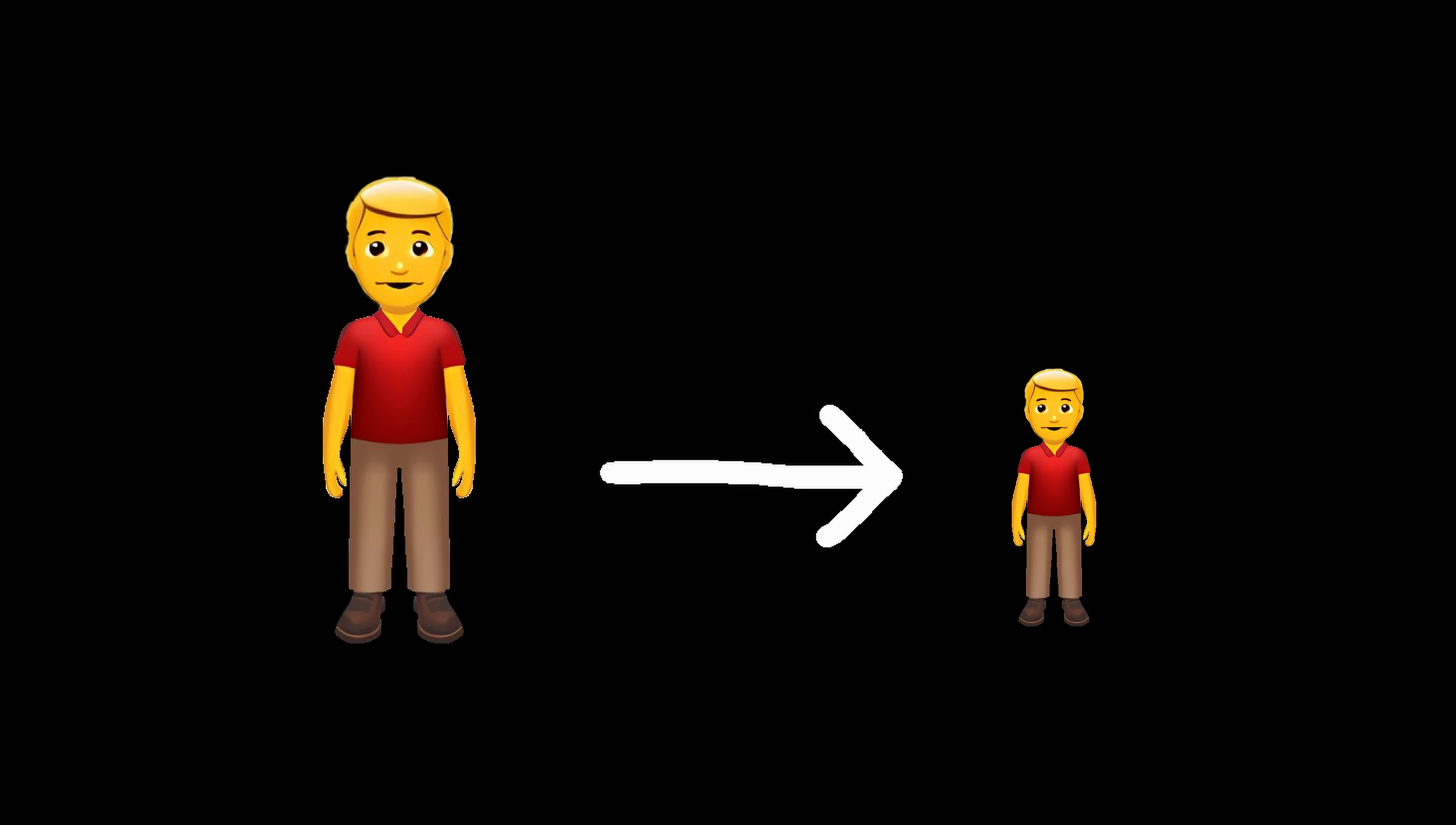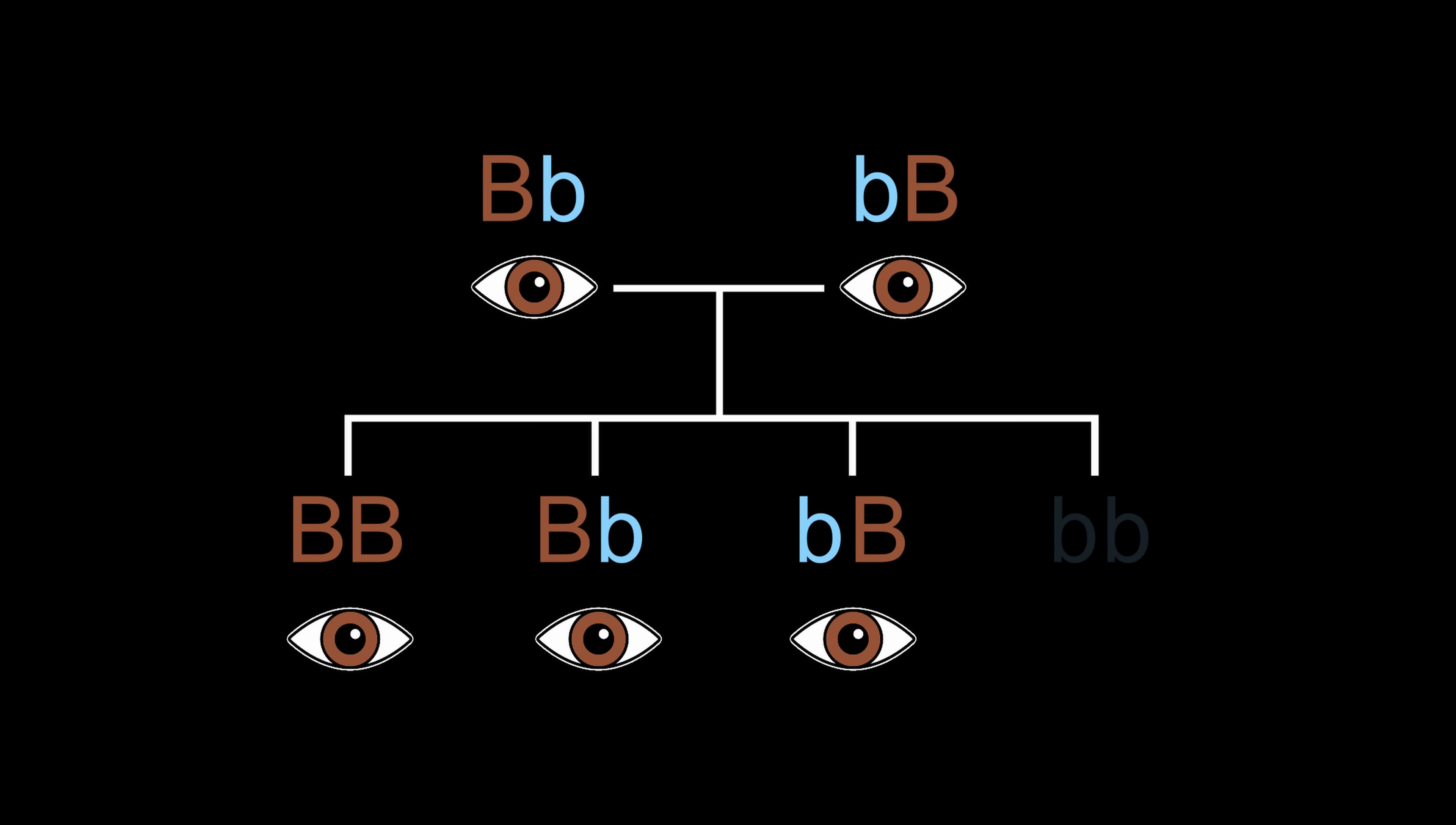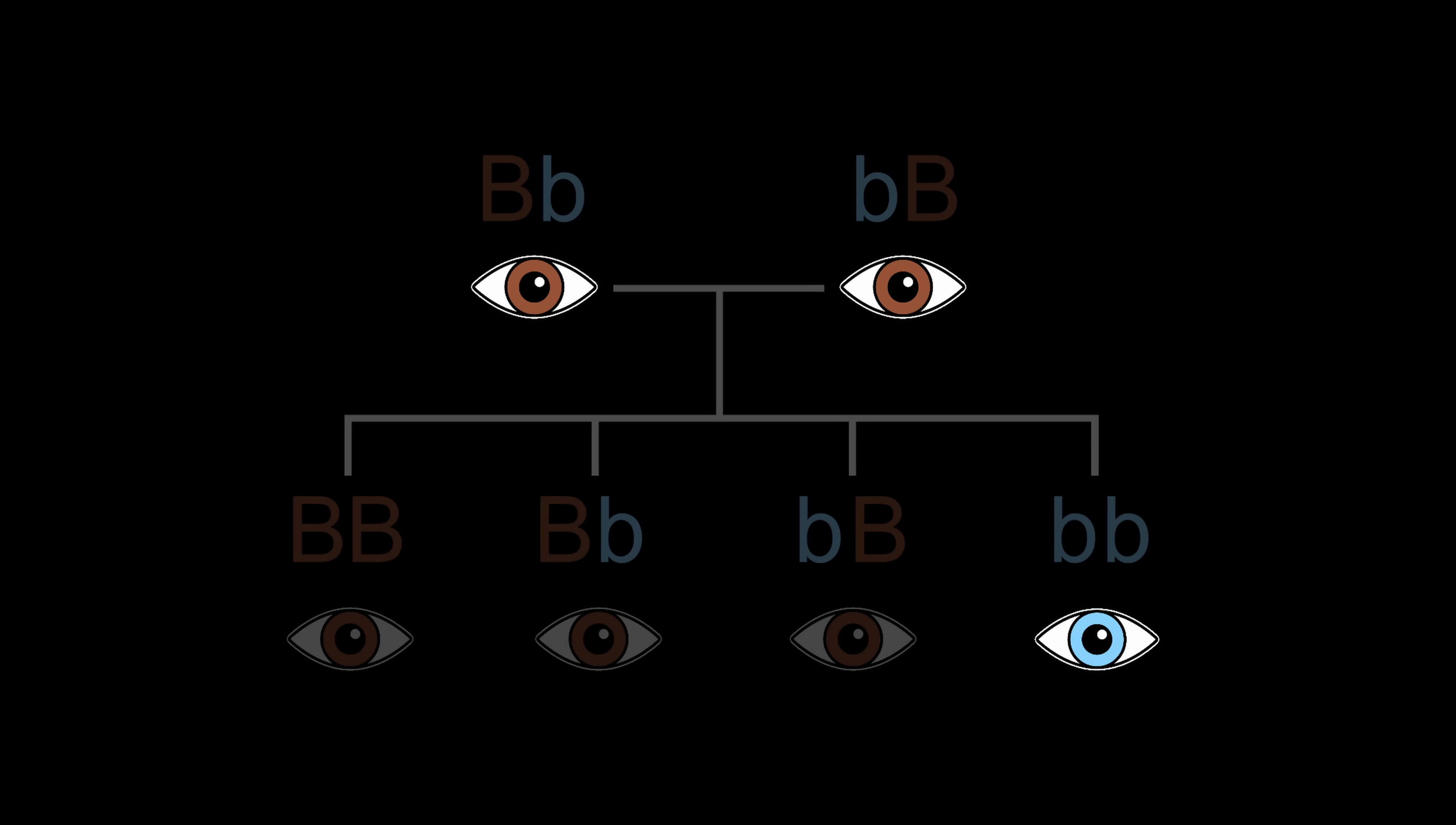With this knowledge, we can predict the future. Let's look at how this trait is inherited from parents to children. Both of these parents have brown eyes, but also have a recessive blue allele in their genotype. Every child receives one allele from each parent randomly, so these are the possible combinations for the children. Most combinations contain the dominant brown allele, so the child will have brown eyes. But there is a small chance that a child gets two recessive alleles and has blue eyes, even though both parents had brown eyes. You see, it's what's on the inside that counts.